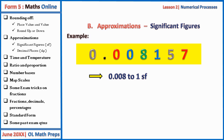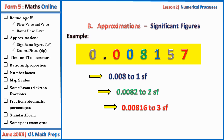To two significant figures it becomes 0.00082, because the second significant digit is one, but the five after one will affect it — we round up to add one to give two. To three significant figures we have 0.000816, and to four significant figures it is the same number 0.0008157.